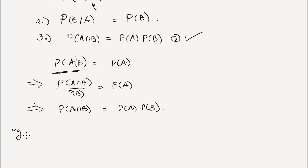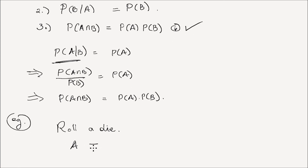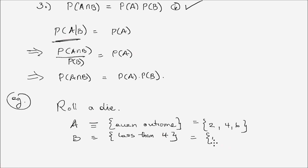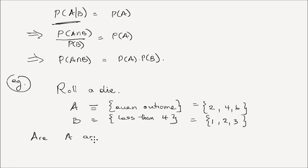Let's do an example. You roll a die. Define event A to be the event that the outcome is an even number. Define event B, which is the event that the outcome is less than four. You have six possible outcomes. We can write the following sets: A is {2, 4, 6}. B contains the elements {1, 2, 3}. Are A and B independent?